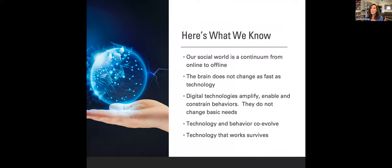Okay, so here's what we know. So here's some basic assumptions, right? Our social world isn't restricted to one place or another. It's this continuum that runs from online to offline. We also know that the brain does not change as fast as technology does. So we have a lag in how we start to understand things and can use them. Digital technologies amplify and enable and constrain behaviors, but they do not change our fundamentals. They do not change our basic needs, and they don't make you do things you wouldn't otherwise do.